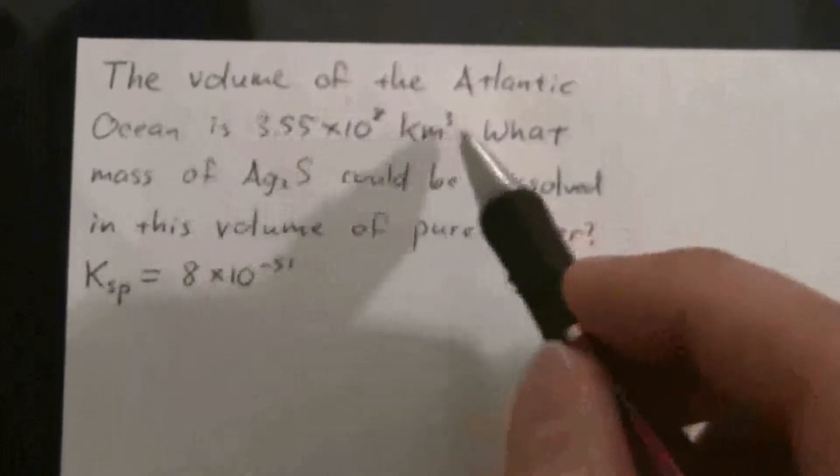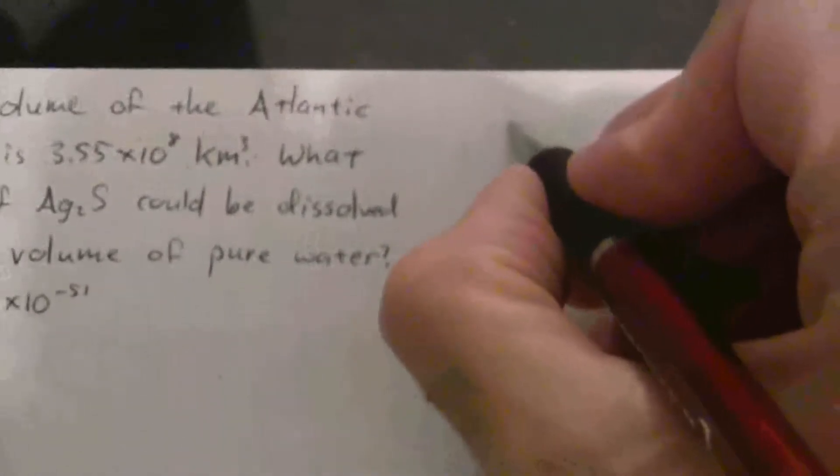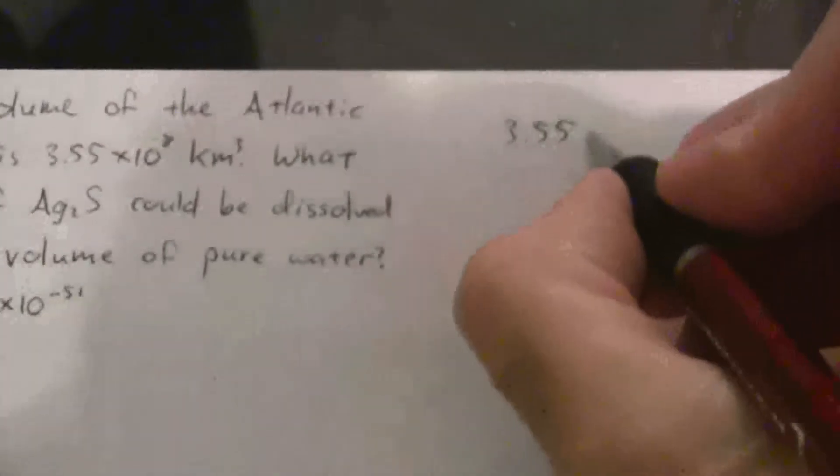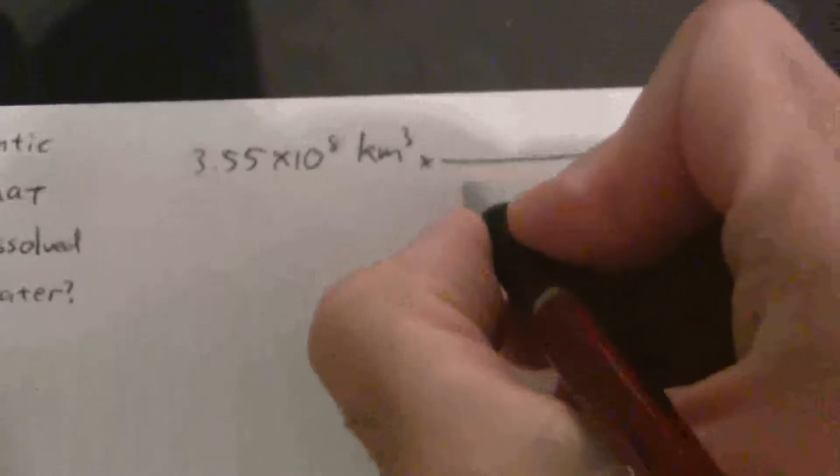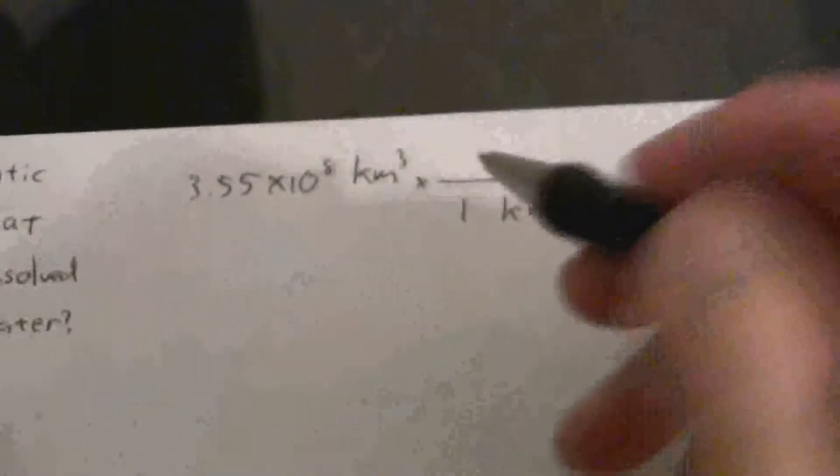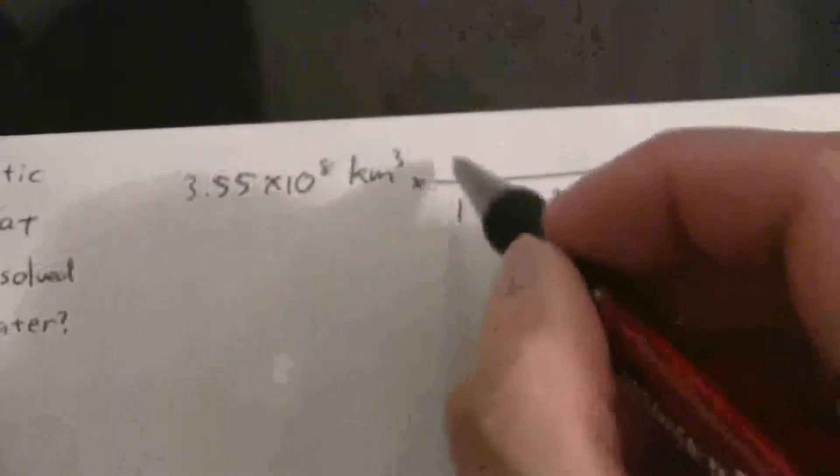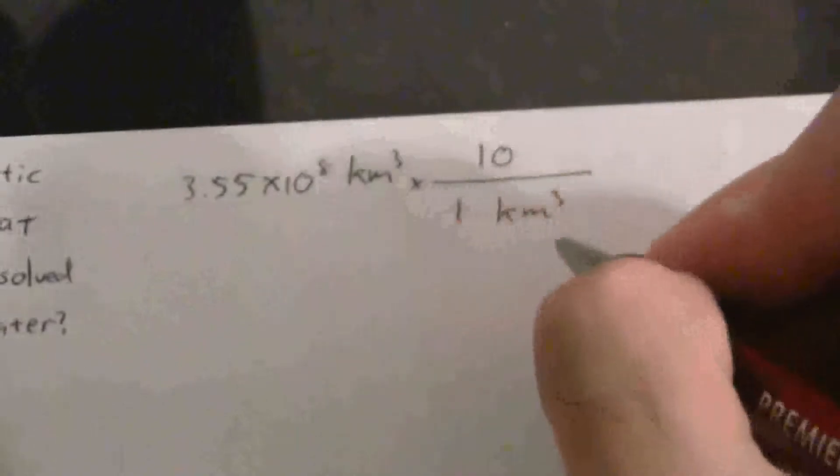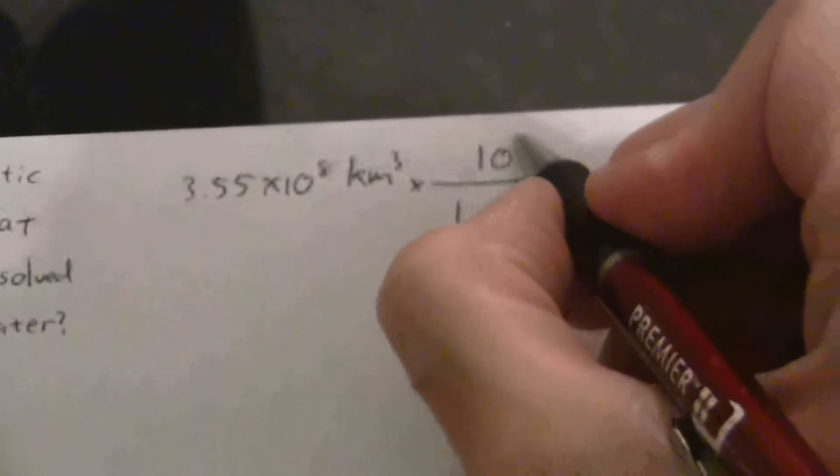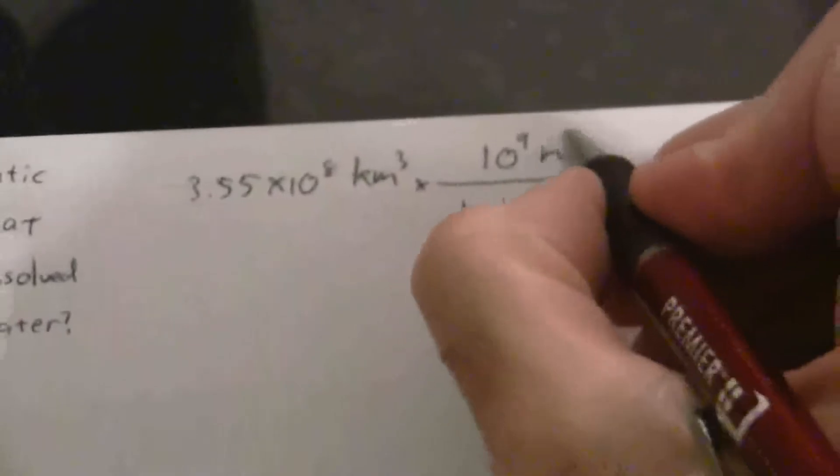First let's find what this volume is in liters because we'll need to know that for our molarity. Let's do a quick conversion: 3.55 times 10 to the eighth cubic kilometers. In one cubic kilometer there are how many cubic meters? Well there's a thousand meters in one kilometer, so that would be 10 to the third, but then we're cubing that, so 3 times 3 is 10 to the ninth cubic meters.